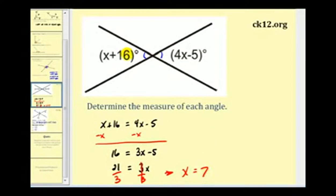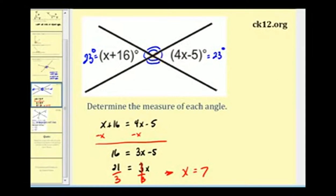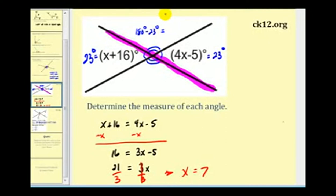With x equal to 7, this angle is 7 plus 16 degrees, or 23 degrees. Because these are vertical angles, the opposite angle is also 23 degrees. The remaining two angles are also vertical angles and therefore equal. Since the angles along the line are supplementary, this angle is 180 minus 23 degrees, which gives 157 degrees. So the other remaining angle is also 157 degrees.